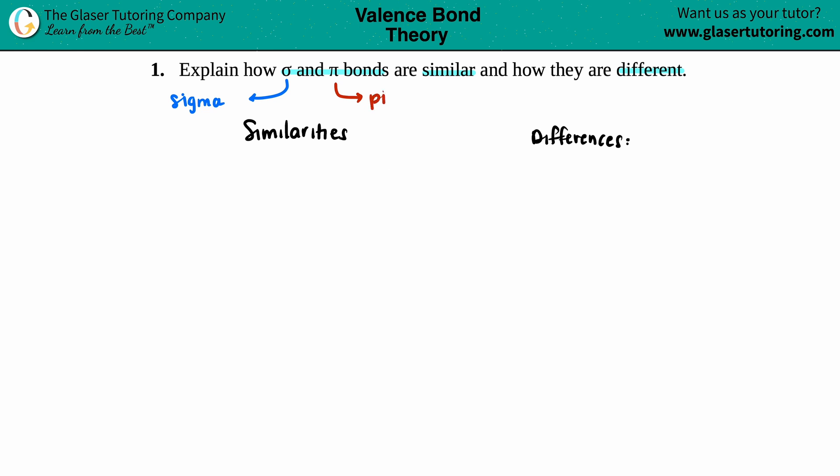Okay, so similarities between sigma and pi bonds. Well, they're both bonds, right? And we only use sigma and pi bonds when we talk about covalent bonds. So these types of bonds are only located in covalent bonds, meaning that they're only going to be shown when you have nonmetals coming together.